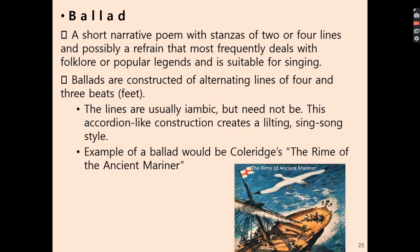The second form is ballad. The ballad is a narrative poem with stanzas of two or four lines. It is a poem that deals with folklore or popular legend, and is made to be sung. Ballads are constructed of alternating lines of four and three beats. The lines are usually iambic, but don't have to be, creating an accordion-like, lilting or sing-song style. An example is 'The Rime of the Ancient Mariner' by Coleridge.